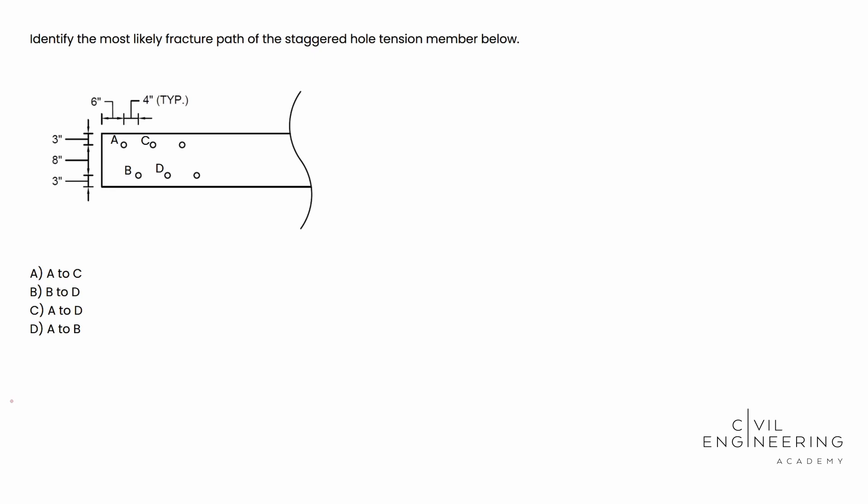So here's what the question says: Identify the most likely fracture path of the staggered hole tension member below. All right, so we see our tension member there. We see that we have a certain amount of holes - looks like we got six. We're given clear distances, those types of things.